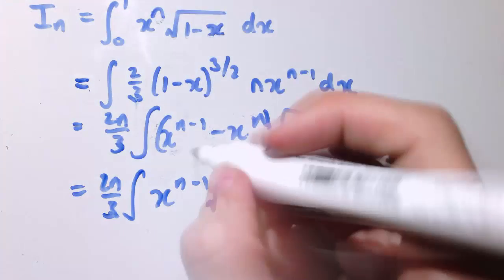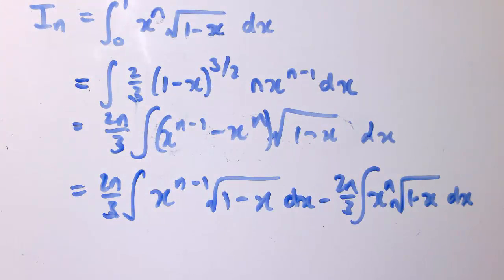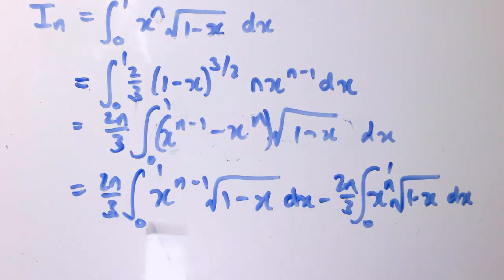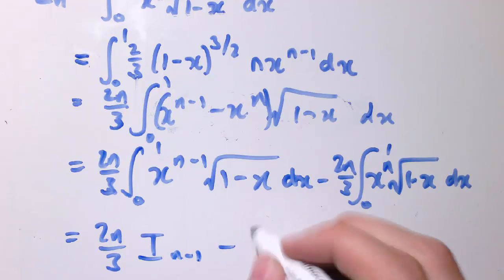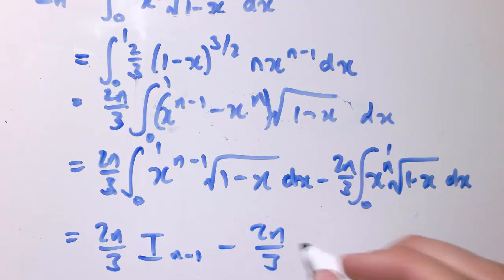And of course, all of these integrals should have 0 and 1 on them for the limit. And this one now is exactly i n minus 1, and this is exactly i n. So I've got 2n over 3 times i n minus 1 minus 2n over 3 i n, and that gives me a formula that's relating i n to i n minus 1.